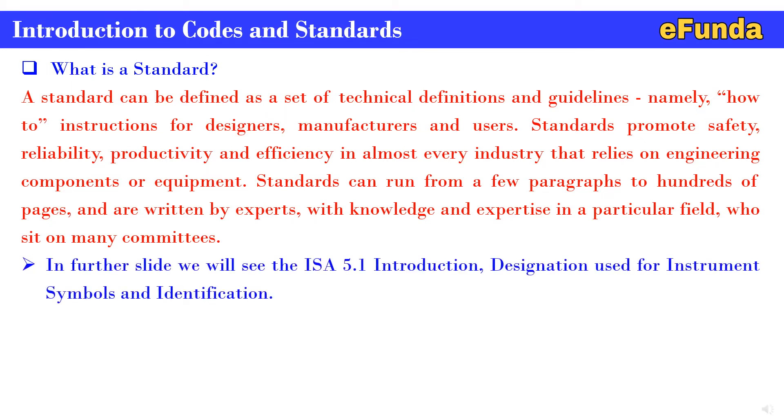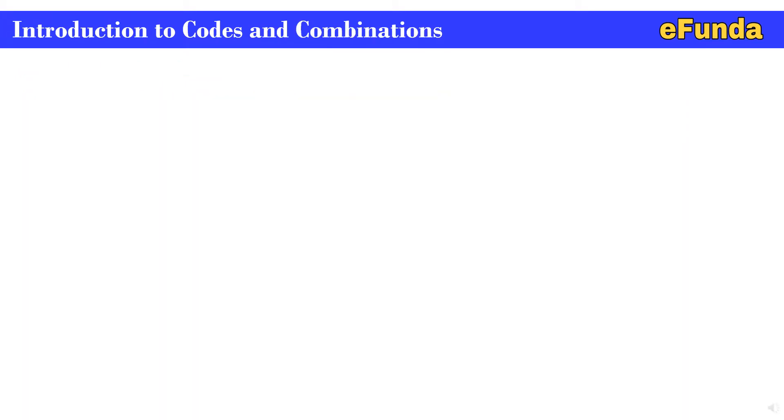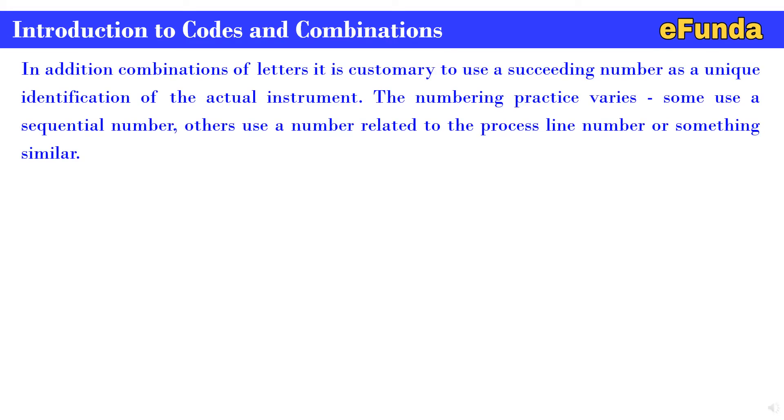In further slides, we will see the ISA 5.1 introduction designation used for instrument symbols and identification. Similarly, there will be separate instrumentation symbols, location and meaning shall be covered in a separate video. Introduction to codes and combinations. In addition, combinations of letters - it is customary to use a succeeding number as a unique identification of the actual instrument. The numbering practice varies. Some use a sequential number, others use a number related to the process line number or something similar. For this standardization, we will be going through the ANSI ISA 5.1 Instrumentation Symbols and Identification Standard.